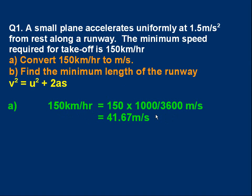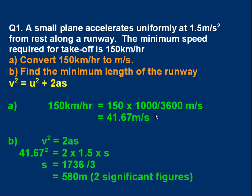The second part is just to find the runway length, which is the distance the plane travels to reach the take-off speed. So the final velocity is 41.67. Because u, the initial velocity, is zero, the equation becomes v² = 2as. So 41.67² = 2 × 1.5 × s. When we solve that and round it to two significant figures, we get 580 meters. So the runway must be at least 580 meters long so the plane has enough distance to reach the take-off speed.